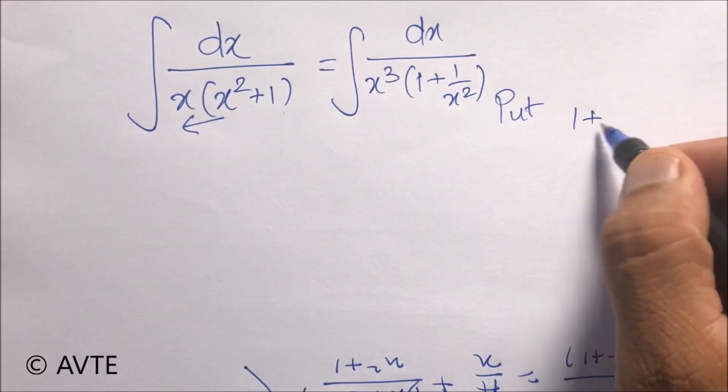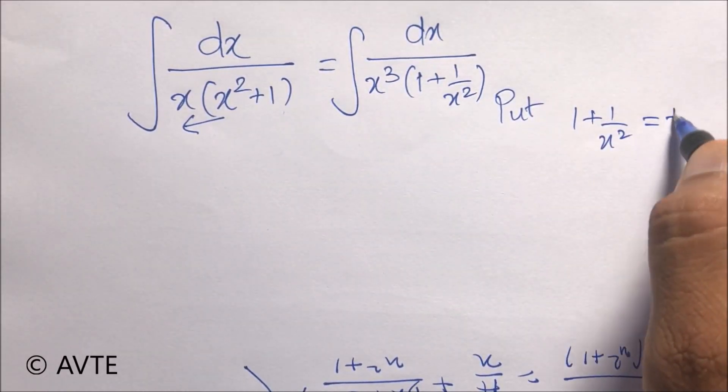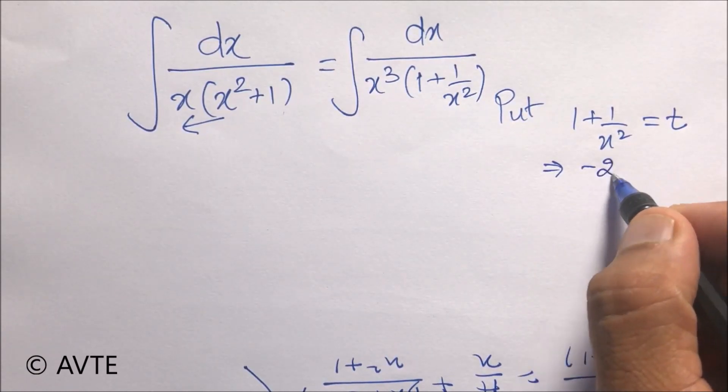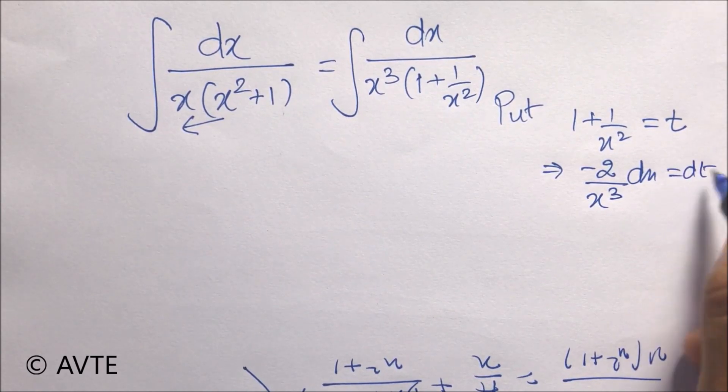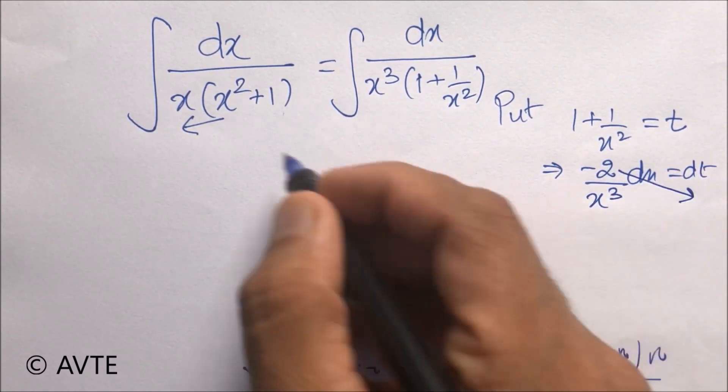And you put 1 plus 1 over x square as t, so that minus 2 over x cube dx becomes dt, and this minus 2 will go down.